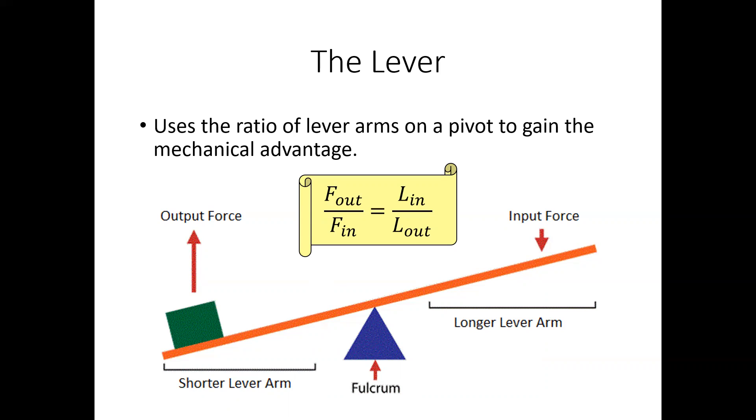What's going to happen is that I want to pick up that green box on the left. I could just pick it up, but if I want a machine for that, which is this orange and blue lever, I can also push down on the right side to pick up the box on the left. Now if the lever arms are the same, that is the distance between the blue fulcrum to the red input arrow, if that length is the same as the blue fulcrum to the left red arrow,